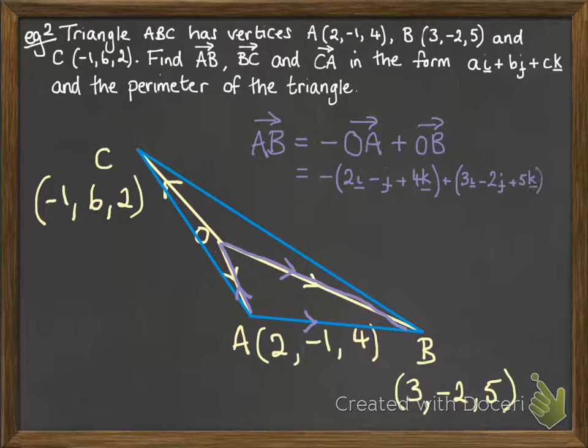So you can see we've got to go backwards along OA, so we've had to make it a negative vector there. Put that all together, and we get our final answer.